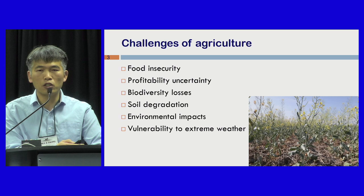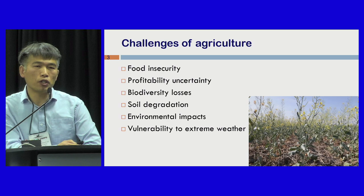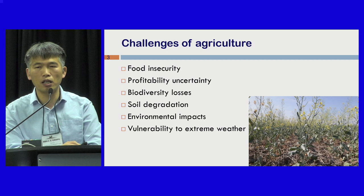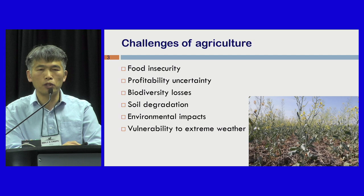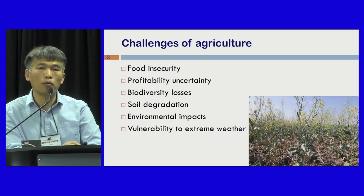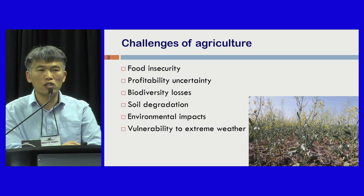We know that agriculture is facing great challenges, such as food insecurity. For producers, the most concerns are about economic returns and stability. On the Canadian prairies, the farm size is pretty big, and modernized agriculture practices normally reduce crop species diversity, causing concerns about the resilience of Cropping Systems. Agriculture is also a big contributor to greenhouse gas emissions, and there is no doubt that climate change affects Cropping Systems performance. One way to address these challenges is to optimize the current Cropping Systems.